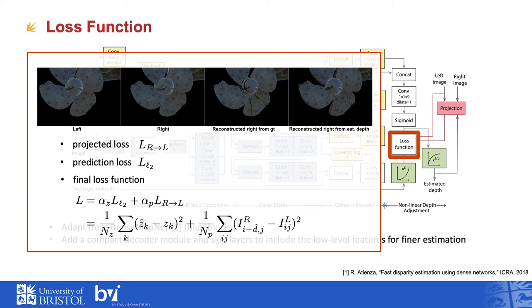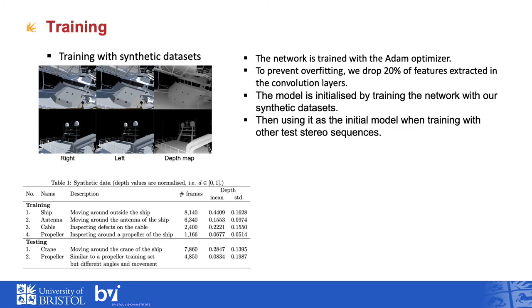Experimental results show that adding the projected loss improves prediction performance by approximately 20%. For robustness, we include 8 scenes of simulated stereo sequences — a total of 25,000 stereo pairs with a resolution of 80 x 640 pixels — created using Unity software and the Elastic Fusion algorithm by Blendler Engineering. The examples of the synthetic dataset are illustrated on this slide. The scenes include both simple and complicated structures with narrow objects at different depths.